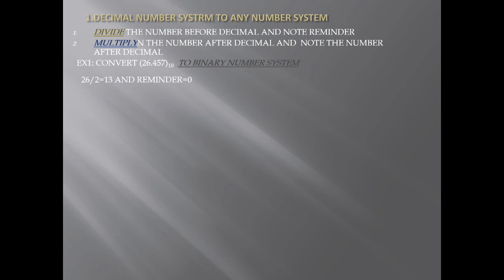We divide 26 by 2: 26 ÷ 2 = 13, remainder 0. Next, divide 13 by 2: 13 ÷ 2 = 6, remainder 1.